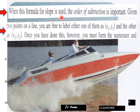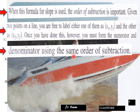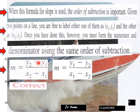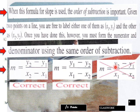When this formula for slope is used, the order of subtraction is important. Given two points on a line, you are free to label either one of them as X1, Y1 and the other as X2, Y2. Once you've done this, however, you must form a numerator and denominator using the same order of subtraction like this here. Y2 and X2, they line up and then Y1, X1, they line up. So you're subtracting this way from Y, X2 to X1, etc. That would be correct. Y1, X1 and then Y minus Y2, X2, that would be correct too. It doesn't matter. You can put Y1, X1 up front or Y2, X2 up front. This would be incorrect when you mix up here. You got Y2 minus Y1, then you got your X1. These don't line up here. These have to be the same subtext here for you to have a correct slope calculation.